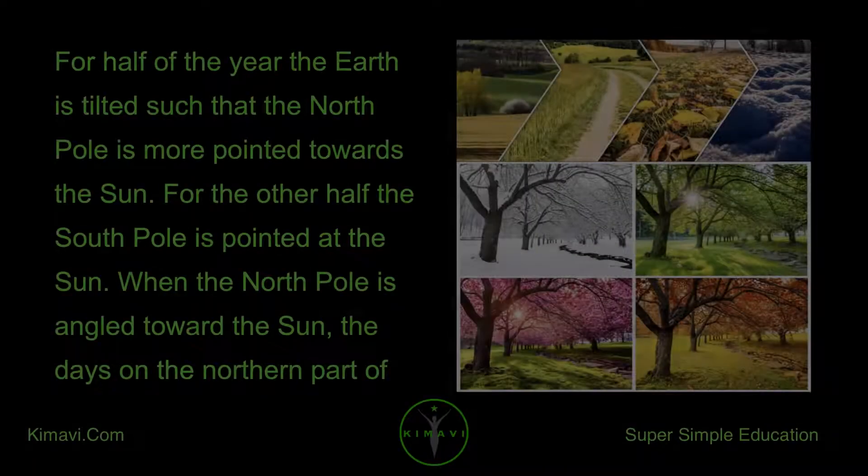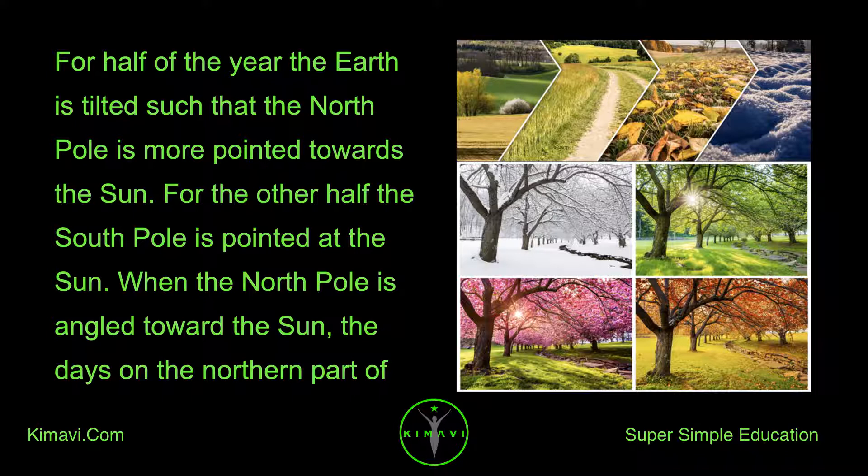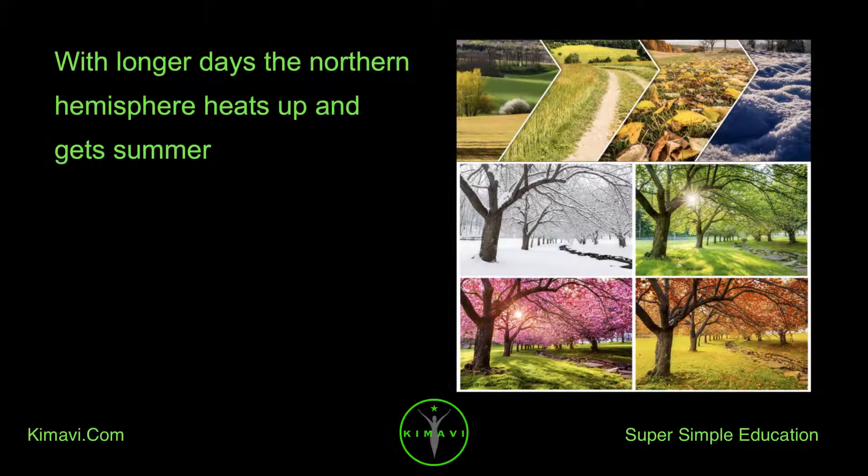For half of the year the Earth is tilted such that the North Pole is more pointed towards the Sun. For the other half the South Pole is pointed at the Sun. When the North Pole is angled toward the Sun, the days on the northern part of the planet get more sunlight or longer days and shorter nights. With longer days, the northern hemisphere heats up and gets summer.